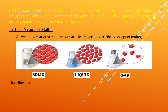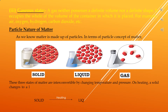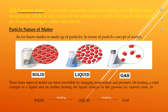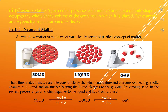These three states of matter are interconvertible by changing temperature and pressure. On heating, a solid changes to a liquid, and on further heating, the liquid changes to the gaseous or vapor state. In the reverse process, a gas on cooling liquefies to liquid, and the liquid on further cooling freezes to solid.